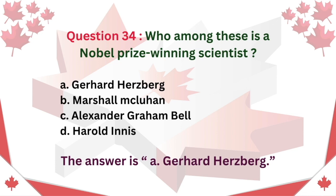Question 34. Who among these is a Nobel Prize-winning scientist? A. Gerhard Herzberg B. Marshall McLuhan C. Alexander Graham Bell D. Harold Innes. The answer is A. Gerhard Herzberg.